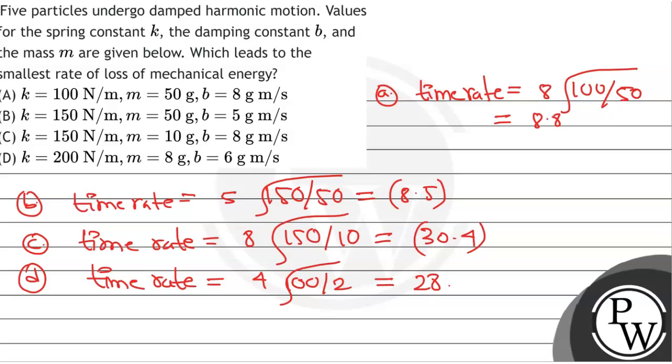So we have the values. Option B has the lowest value compared to others, hence the right answer is B.